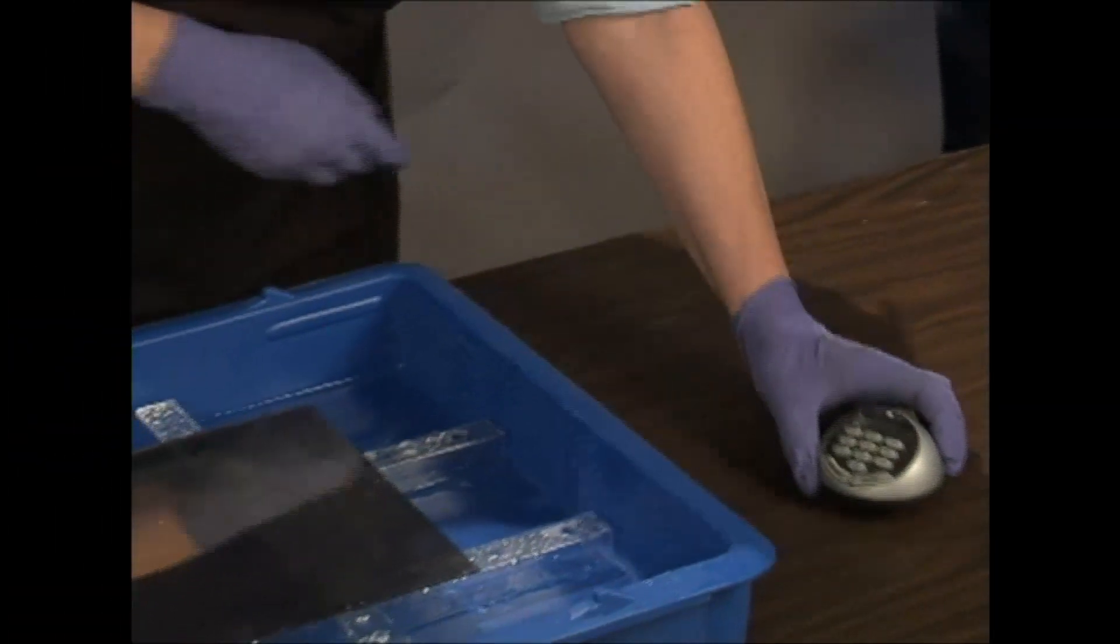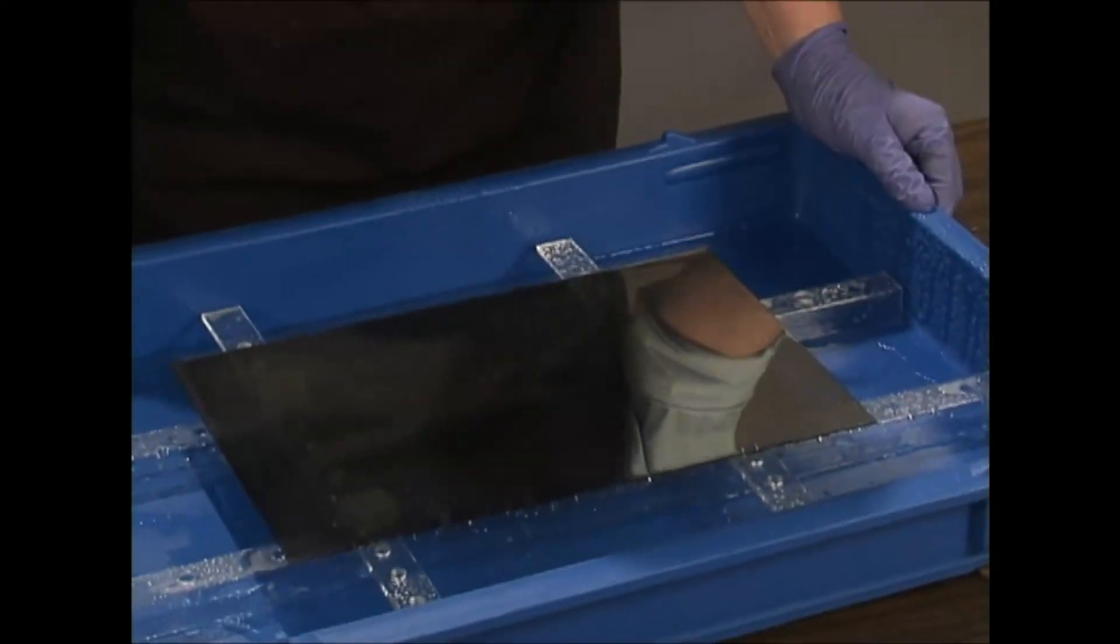As the silver begins to deposit, the glass turns brown and then silver.